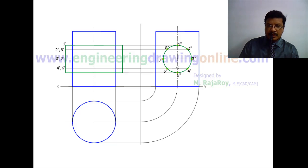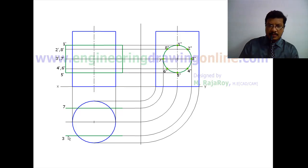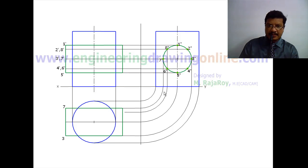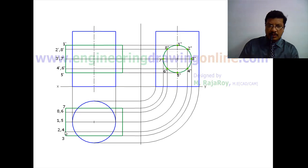Now project the top view. From here you draw the projectors. This is 7, this point is 3. Complete the top view and draw the remaining projectors to get the remaining points. Here 8 is visible. Just below this 8 you will get 6. So this point is 8 and 6. Similarly here 1 and 5. Here you will get 2 comma 4.